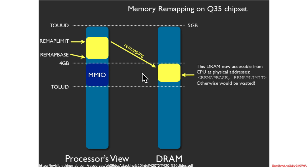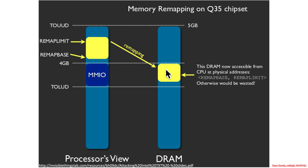There is a capability to remap a chunk of higher physical address space above 4 gigabytes so that RAM lost to MMIO gets reused and remapped up to a high address range. This is the picture from the Invisible Things Labs research in 2009. There is literally a register called remap limit and a register called remap base. They found that they could overlap this range with SMRAM, then read from it, audit the code, and find vulnerabilities.